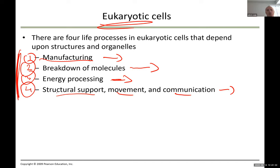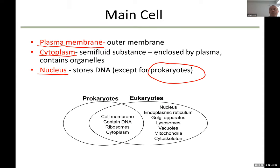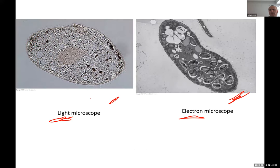For movement, if we were in the lab we would look at a euglena or a paramecium. This paramecium has hair-like structures on the surface — those are called cilia. You can see them clearly on the surface of the paramecium.